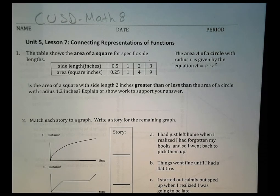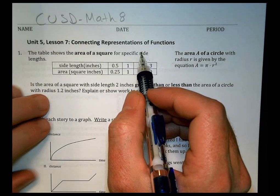Hey there, this is CSD Math 8, Unit 5, Lesson 7: Connecting Representations of Functions. So, look at the first one here. It says this table shows the area of a square for specific side lengths.